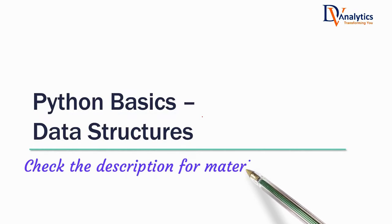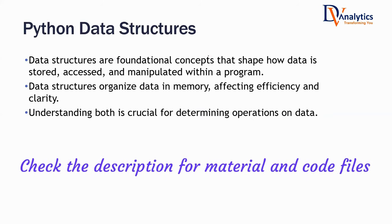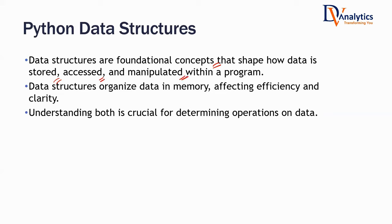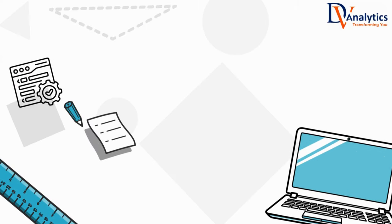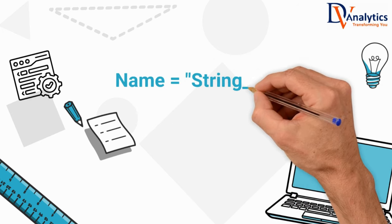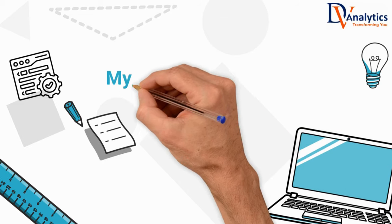Today we are going to discuss data structures, also called data types, in Python. Data structures are foundational concepts for storing data — they define how data is accessed and manipulated. You cannot always store data in a single object format; sometimes you store it in a list, a string, a dictionary, or a set or tuple. There are different data types in Python.